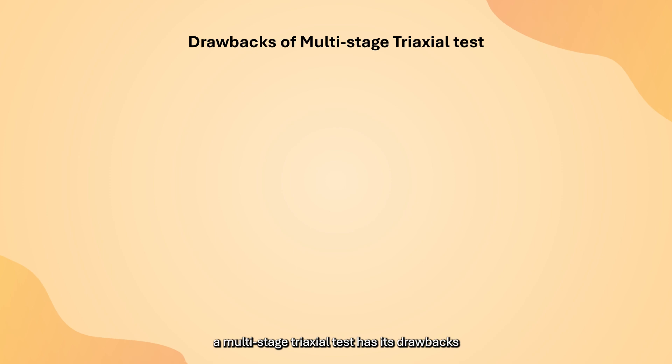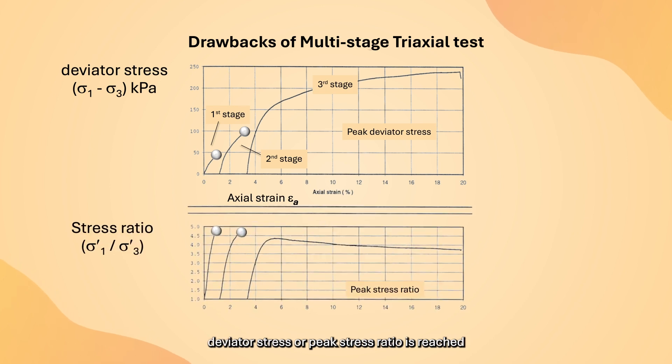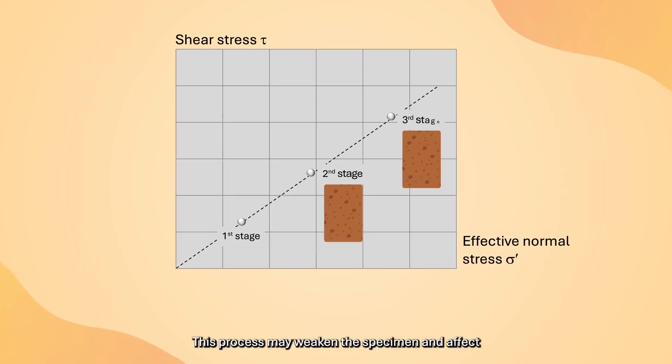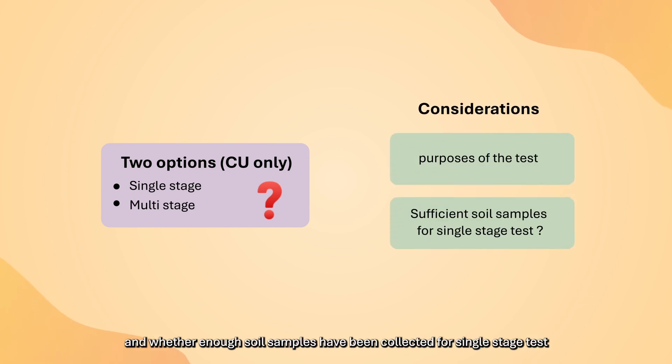However, a multi-stage triaxial test has its drawbacks. In the first and second shearing stage, the test is stopped after the peak deviator stress or peak stress ratio is reached. The specimen will have undergone partial failure at such a state. This process may weaken the specimen and affect its shear strength at subsequent stages. Whether to do multi-stage tests or not depends on the purposes of the test and whether enough soil samples have been collected.